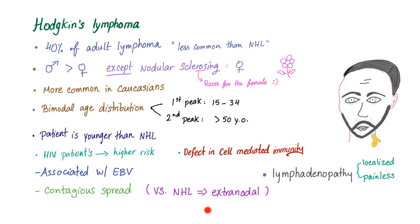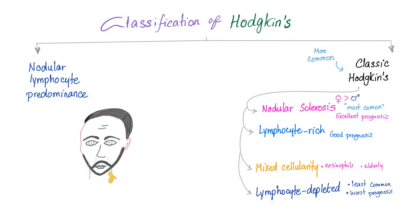Contrast that with non-Hodgkin's — there is extra-nodal spread. Hodgkin's lymphoma presents with lymphadenopathy, which is localized but painless. Infection is painful; cancer is painless. We classify Hodgkin's lymphoma into nodular lymphocyte predominance and classic Hodgkin's lymphoma, which is more common. Classic Hodgkin's is further subdivided into four subtypes: nodular sclerosis (commoner in females), lymphocyte-rich, mixed cellularity, and lymphocyte-depleted.